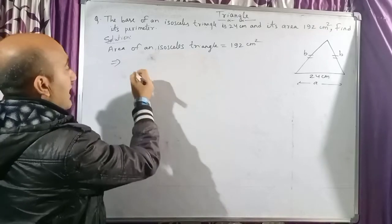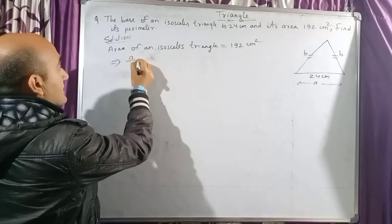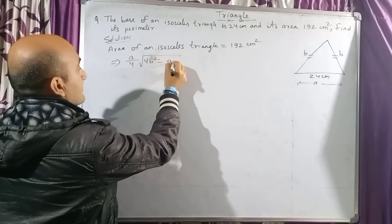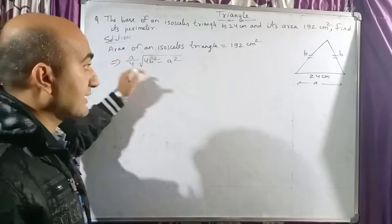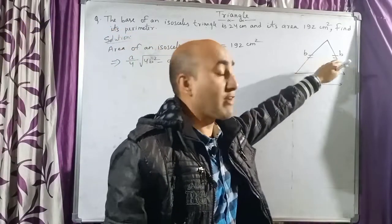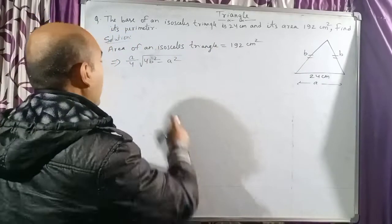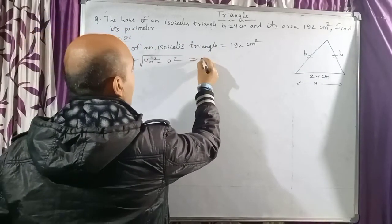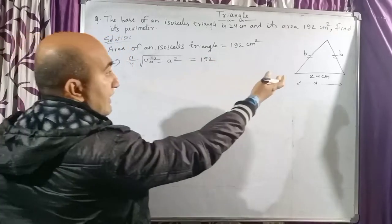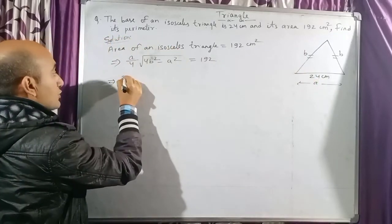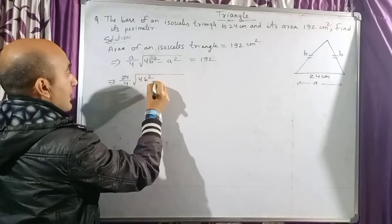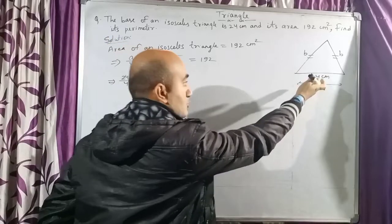Now, area of an isosceles triangle we have learned as: a/4 × √(4b² - a²), where a is the value of the unequal side, the base, and where b is the value of the two equal sides. But the b value is unknown here, so we have to find the value of b from here equal to its value. And you can see the value of a is 24.